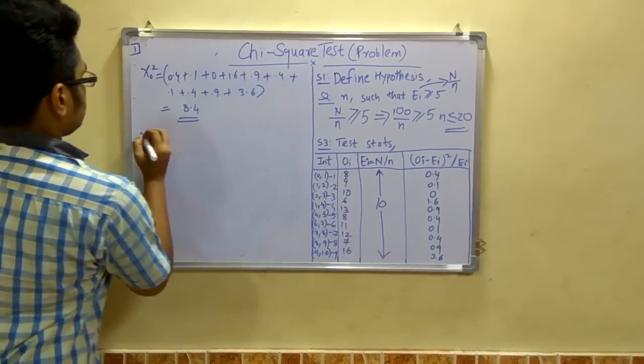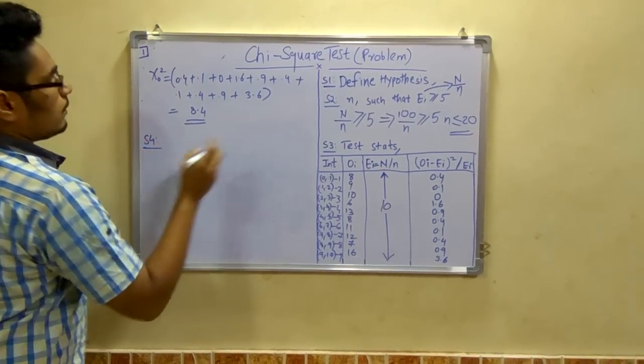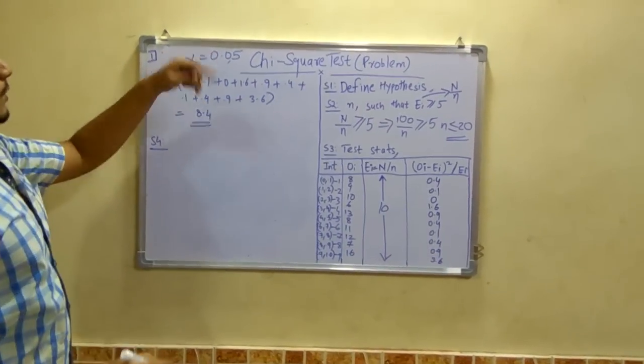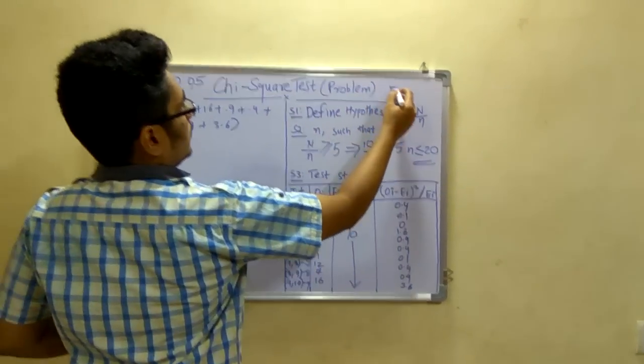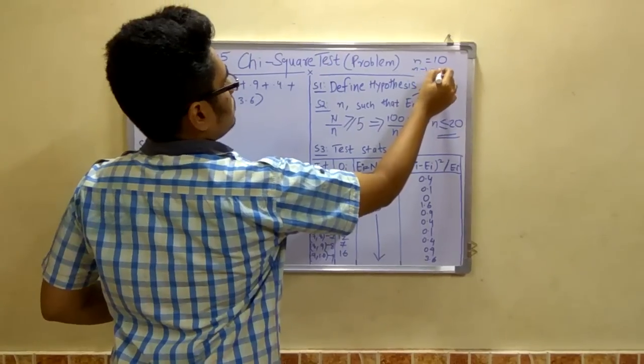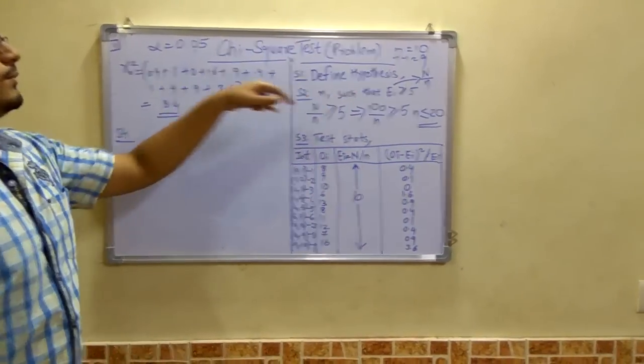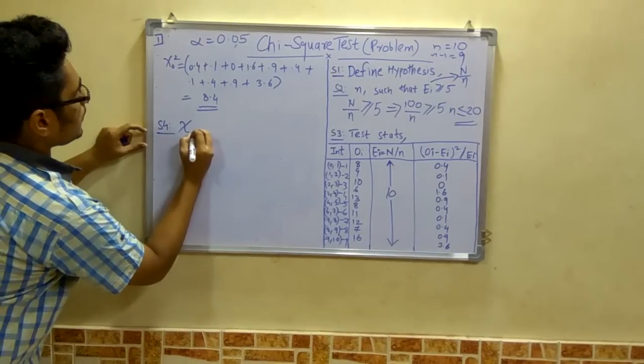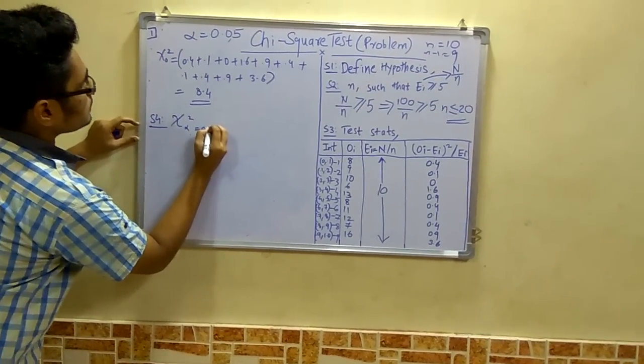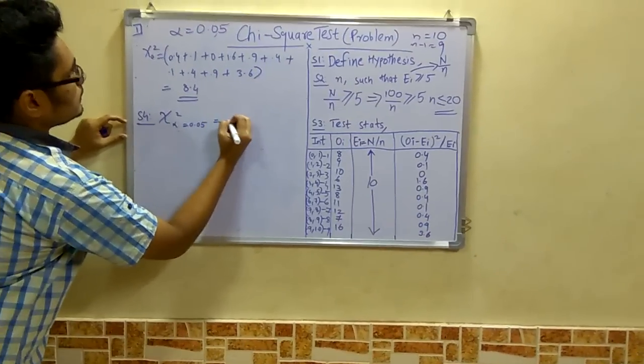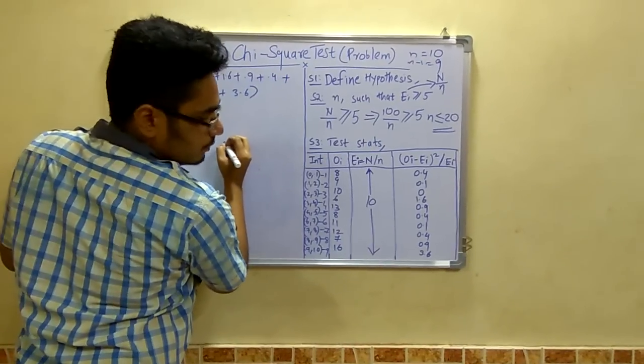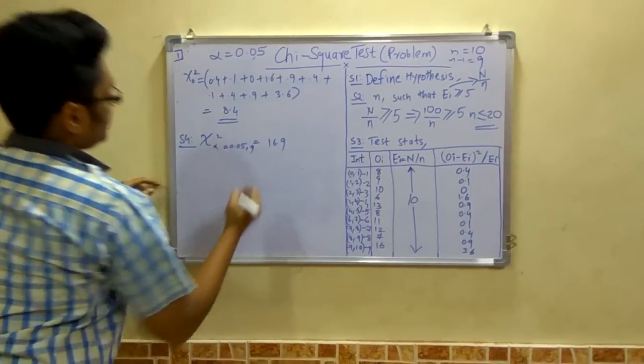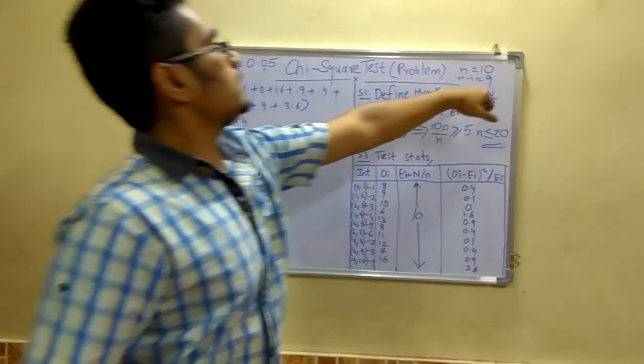Now after this, step 4. In the question they have given the alpha value 0.05. Now for alpha 0.05 at small n, that is 10, that is n-1 is equal to 9, at 9 degrees of freedom, you have to calculate this value. The value of chi-alpha square at 0.05 comes out to be 16.9. This is 9, that is the 10-1, this value.